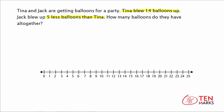If Tina has 14 balloons and Jack has 5 less, that means Jack has 14 minus 5. On the number line, go to 14 and hop backwards by 1's, 5 times. We land on the number 9, which means Jack has 9 balloons while Tina has 14.